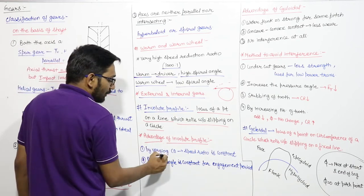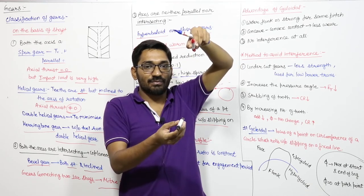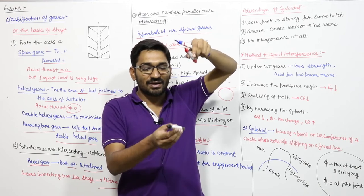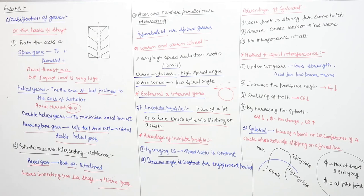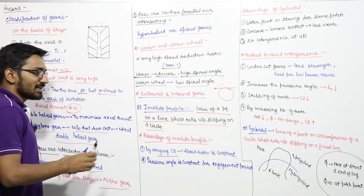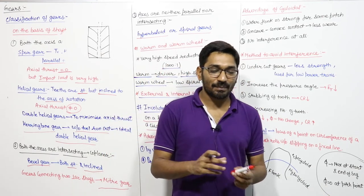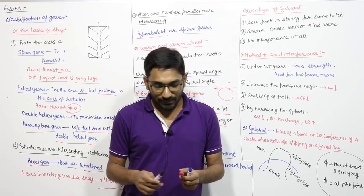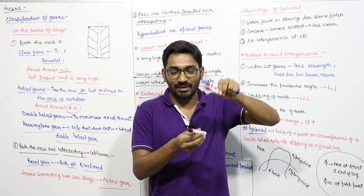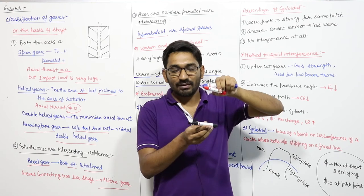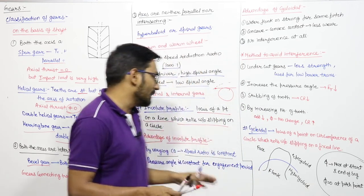Advantages of involute profile: if the center distance varies within permissible limits due to vibrations, the speed ratio remains constant — this is the major advantage of involute profile. In the cycloidal profile, if you vary the center distance, the speed ratio will change. Also in the involute profile, the pressure angle is constant throughout the engagement, from start to end.